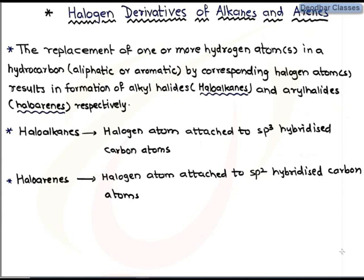First of all, we will learn what are haloalkanes and what are haloarenes. The replacement of one or more hydrogen atoms with a corresponding number of halogen atoms from an aliphatic or aromatic hydrocarbon results in the formation of alkyl halides, also called haloalkanes, or aryl halides, also called haloarenes, respectively.